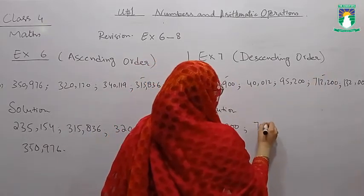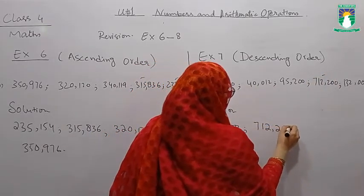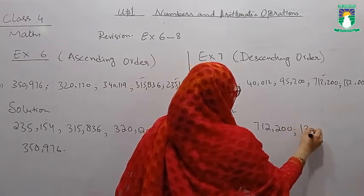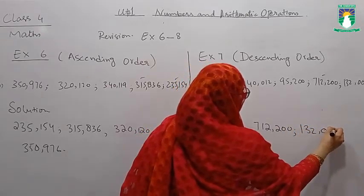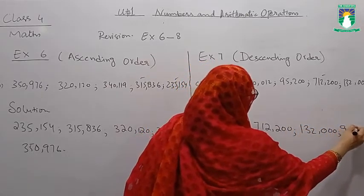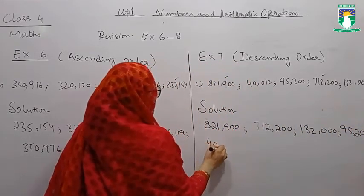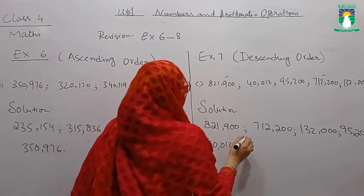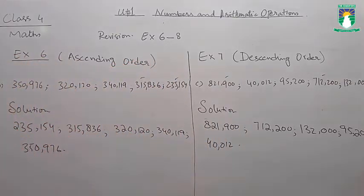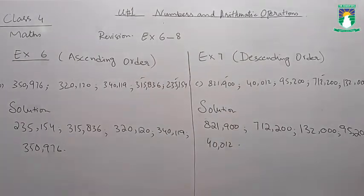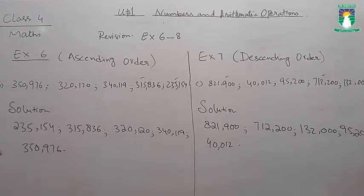After that 712,200, then 132,000, then 95,200, and in the end 40,121. So students, this is the method we are going to follow when we are going to order the numbers doing ascending or descending order.